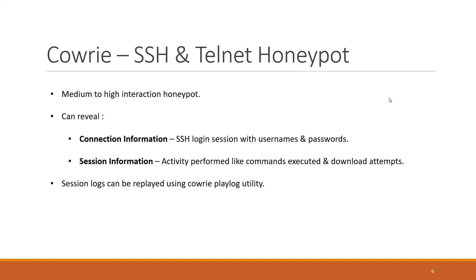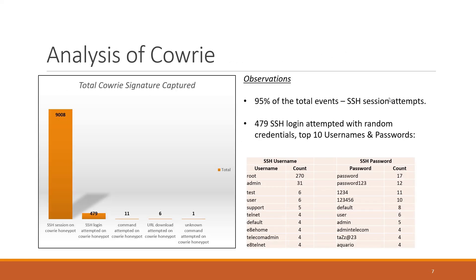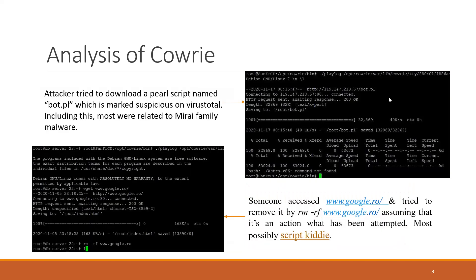This is the analysis of Cowrie. Basically 95% of the total events were made from SSH session attempts, with 479 login attempts using random usernames and passwords. Here are the top 10 usernames and passwords. There were 11 commands attempted with the Cowrie honeypot, six download attempts, and one unknown command.